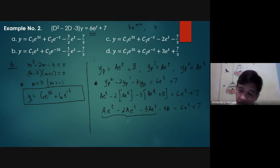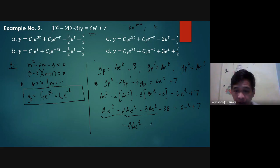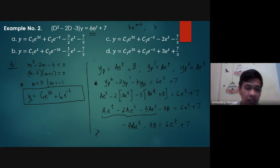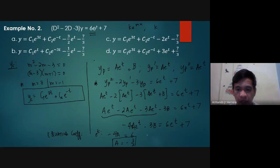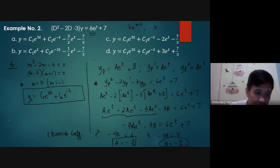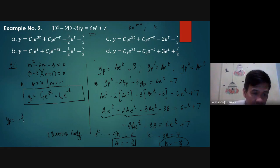Combining terms: negative 4ae to the t minus 3b equals 6e to the t plus 7. Using equating coefficients: all terms with e to the t give negative 4a equals 6, so a equals negative 3 halves. All constant terms give negative 3b equals 7, so b equals negative 7 thirds. Therefore yp equals negative 3 halves times e to the t minus 7 thirds.